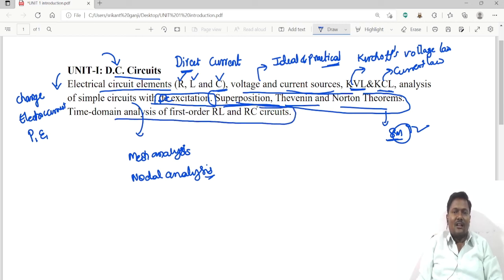From the fundamentals, if he gives one circuit with dependent sources or independent sources problems, you have to solve and find the current flowing through one ohm resistor or two ohm resistor. Like that he will ask and you will solve all the problems. This is the introduction about DC circuits.